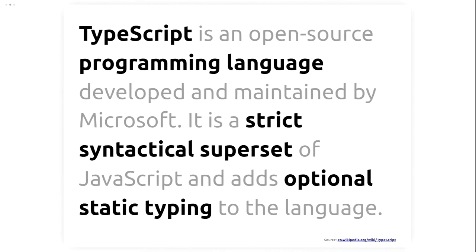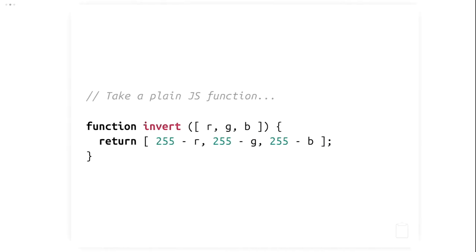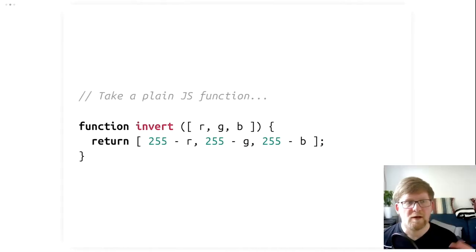But today's topic is TypeScript. What's TypeScript? Well, according to Wikipedia, TypeScript is an open-source programming language developed by Microsoft that's a strict syntactical superset of JavaScript and that adds optional static typing to the language. What's all that about? Let's look at a practical example. This is a simple function that takes RGB values as its input and returns RGB values as its output. It inverts colors.